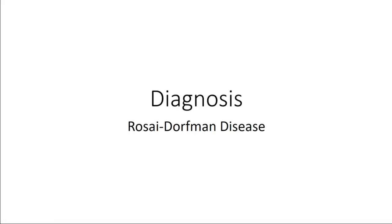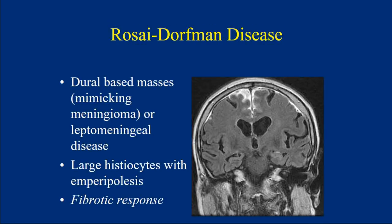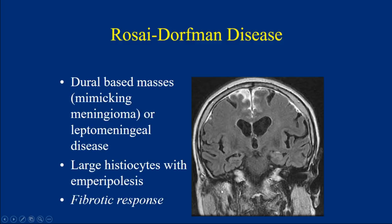The diagnosis is Rosai-Dorfman disease, which can involve the intracranial compartment. Many histiocytoses classically present as single masses that can mimic meningioma — that is often the preoperative diagnosis. It can also present as a more disseminated process involving the leptomeninges with a fibrotic response. They present as dural-based masses or leptomeningeal disease, and the histology is identical to what you see at extracranial sites. They can elicit a fibrotic response that obscures the diagnostic cells and emperipolesis — something to keep in mind when the process has been present for a while.